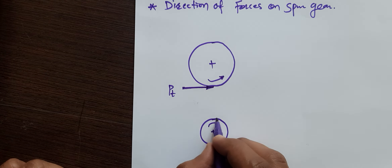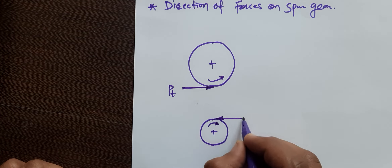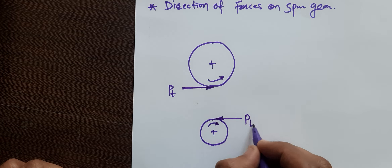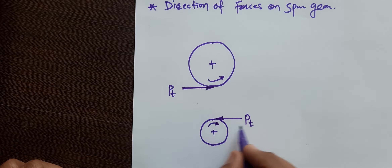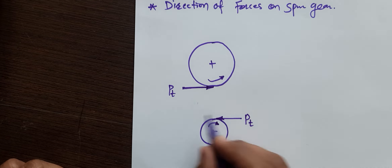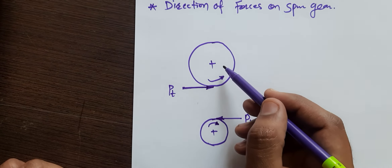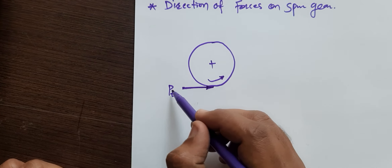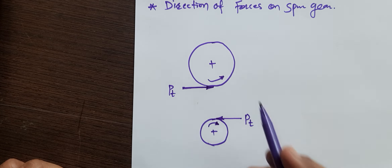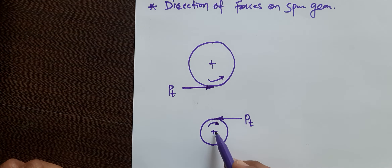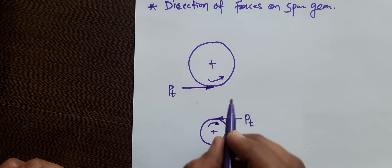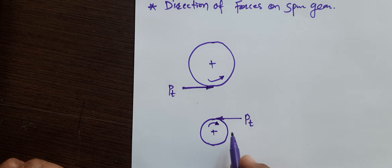On the driving member, the tangential component will be opposite to the direction of rotation. So as it is rotating in clockwise direction, the tangential component will try to oppose the rotation. On the driven member, the tangential component will assist the rotation; on the driving member, the tangential component will oppose the rotation. This is the concept for the external gear pair.